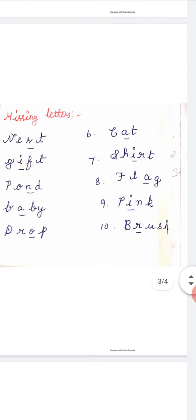Sixth one, cat. C-A-T, cat. Seventh one, shirt. S-H-I-R-T, shirt. Eighth one, flag. F-L-A-G, flag. Ninth one, pink. P-I-N-K, pink. Then tenth one, brush. B-R-U-S-H, brush.